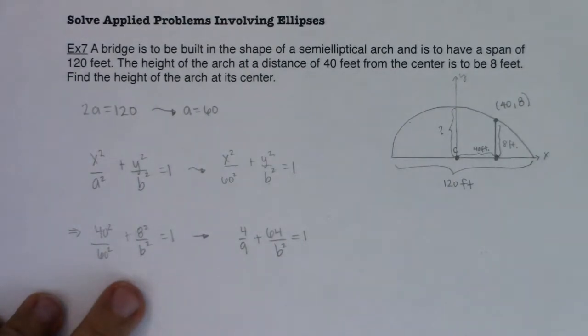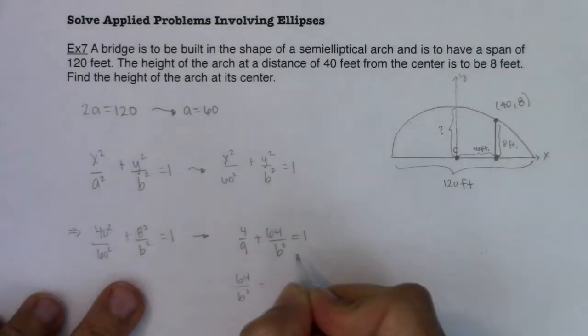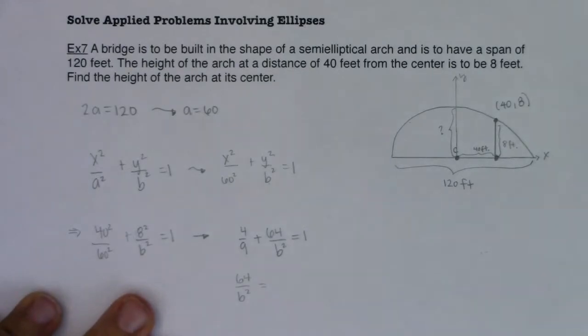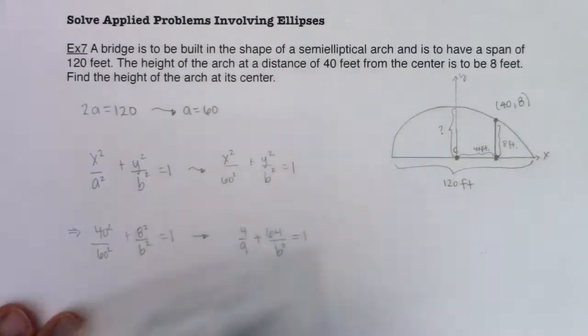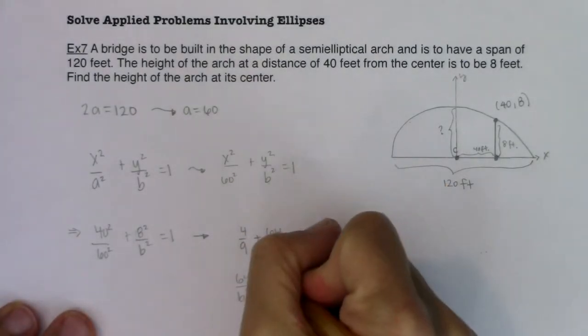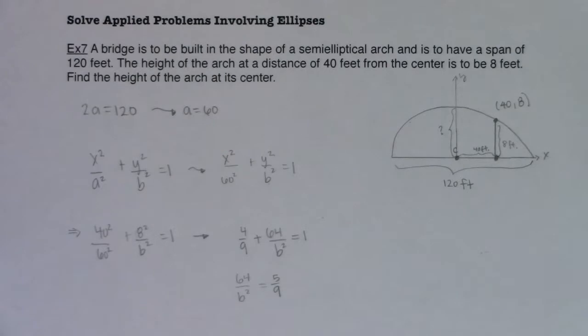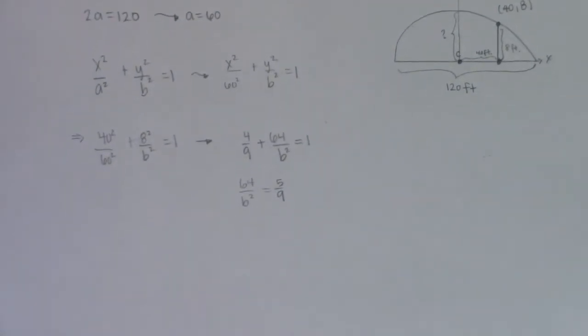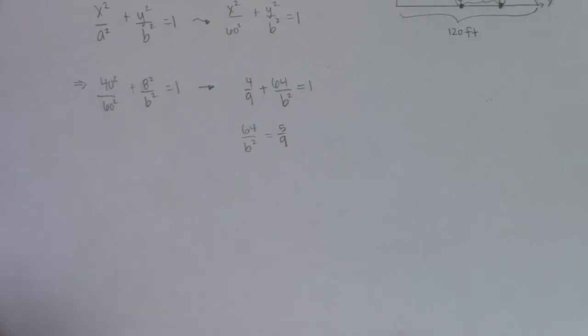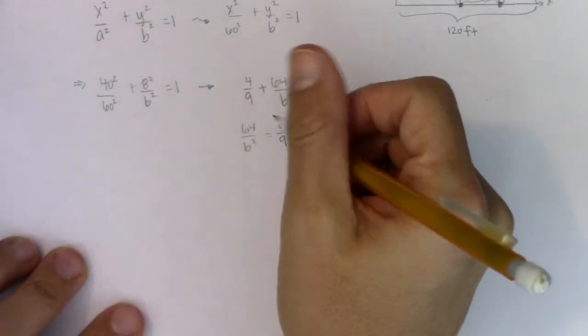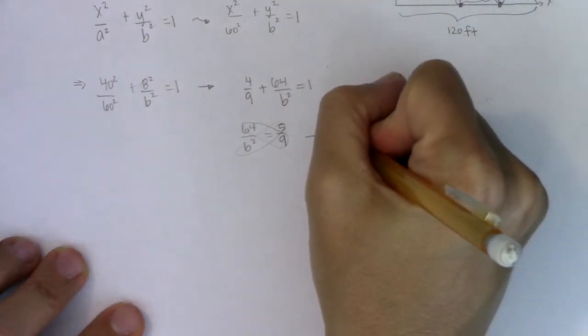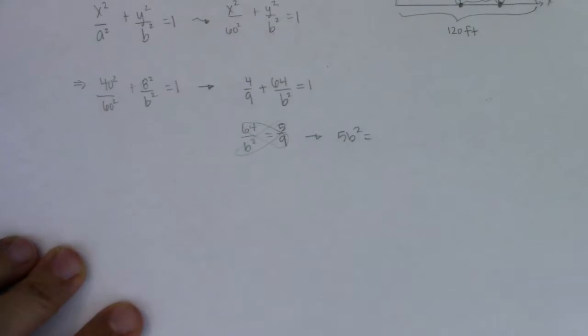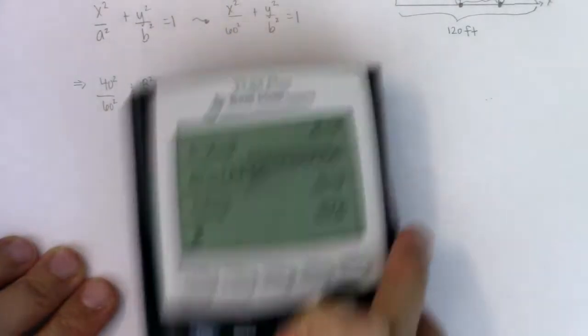If I want to get rid of, actually you know what I'll do first, I'll subtract the 4 ninths. So I'm going to do 64 over b squared and I'm going to do 1 minus 4 ninths but I'm just going to plug that into my calculator. Let's do 1 minus 4 ninths. We're looking at 5 ninths. So this is me subtracting 4 ninths from both sides. Now what I think I want to do is I'm going to cross multiply. So moving from there we would have 5b squared. Let's see what 64 times 9 leaves us with. It looks like 576.